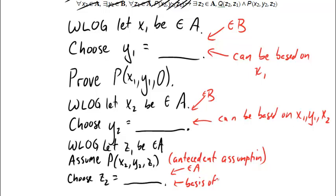And it can be chosen on the basis of, goodness, everything so far. So really everything else. X1, Y1, X2, Y2. And I think that's it. That's all the, oh no, Z1. On the basis of all of those things. Okay.